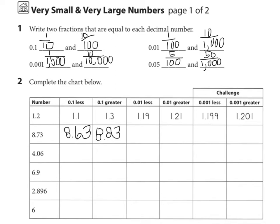One hundredth less for eight and seventy-three hundredths: looking at the hundredths place, we have three. One hundredth less would be two, so we get eight and seventy-two hundredths. One hundredth greater would be eight and seventy-four hundredths. For one thousandths less, we can add a zero in the thousandths place and think of it as seven hundred thirty thousandths. So one thousandths less gives eight and seven hundred twenty-nine thousandths. One thousandths greater would be eight and seven hundred thirty-one thousandths.